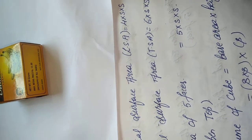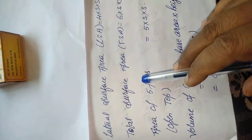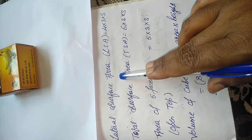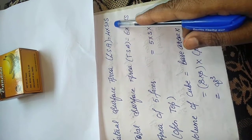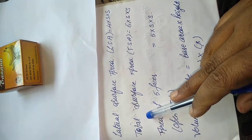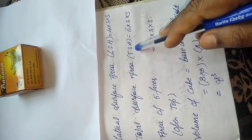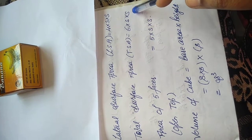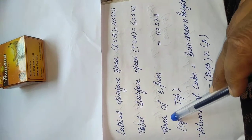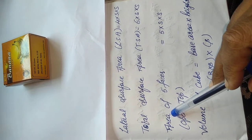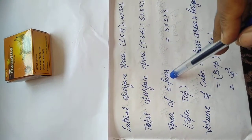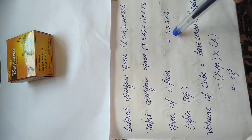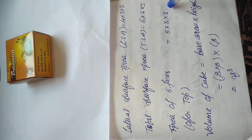Six times of side into side is your TSA formula. Lateral surface area: LSA = 4 × side × side. Total surface area: TSA = 6 × side × side. If you get a question regarding a top-open box or five faces, then we take it as 5 × side × side.